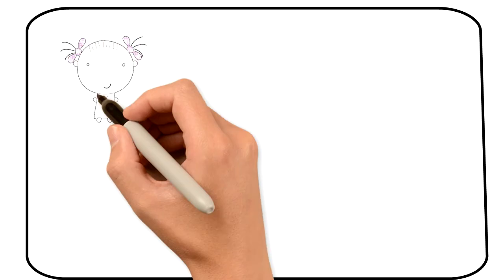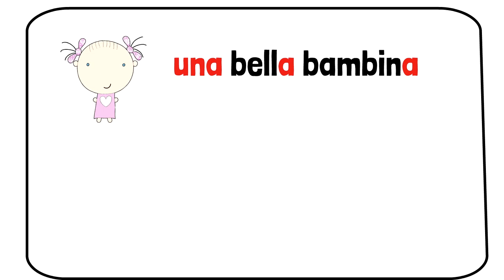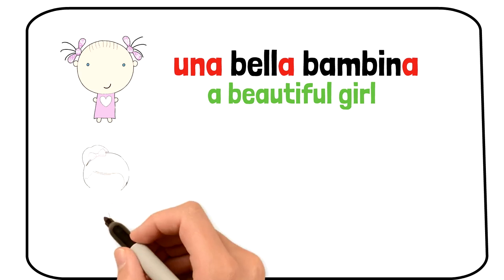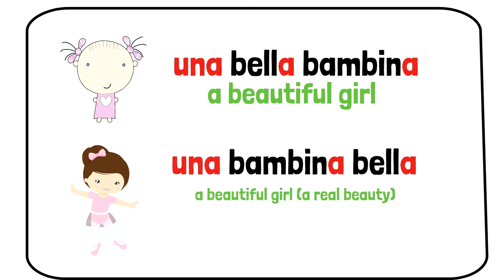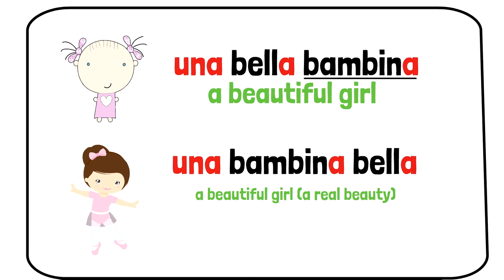Let's look at one more example. Una bella bambina, a beautiful girl. The last word of the sentence is bambina, therefore we are talking about a girl. The adjective we use to describe her, bella, beautiful, is placed before the noun. It means we are talking about one of the many qualities of the girl. In the second sentence, una bambina bella, the focus is on bella, the adjective. Therefore, we are talking about beauty not just as a mere description, but as an absolute quality which determines the girl as a whole.